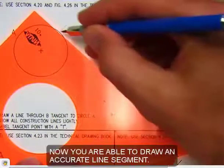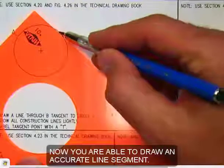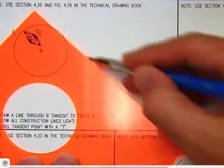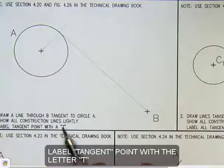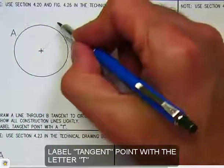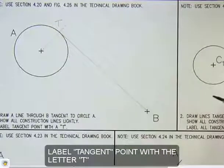Now slide the triangle back into position without letting the lower one move, and now you have two points to draw a line between. We're going to label that new point that we found with the letter T.